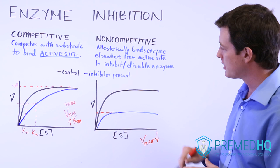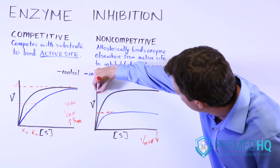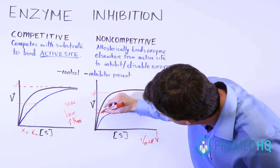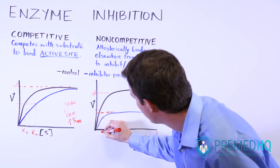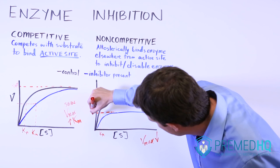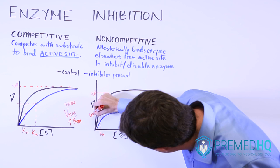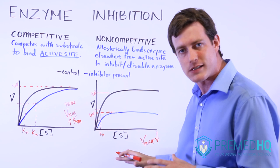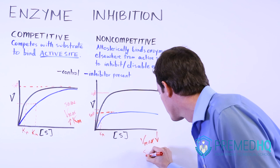Now let's look at the one-half Vmax in both environments. For the control setting without inhibitor, we can find one-half Vmax and bring that line down to find our Km. Our new Vmax with the inhibitor will be lower, and one-half of that new Vmax will also be lower. But if we track that over to where it meets the curve, notice that it meets the curve at around the same point. So the Km is the same in both situations.